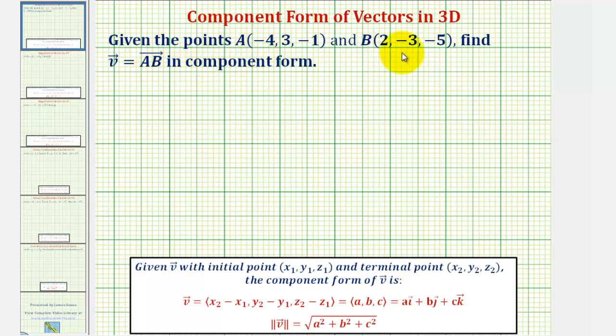In this question, we're given points A and B in space and asked to find vector AB in component form. When a vector is in component form, the initial point would be at the origin.